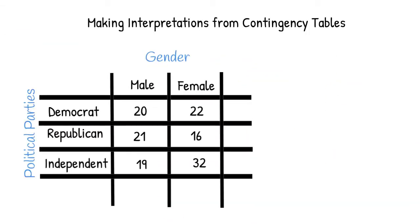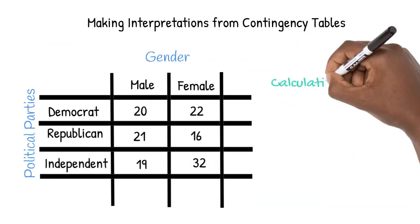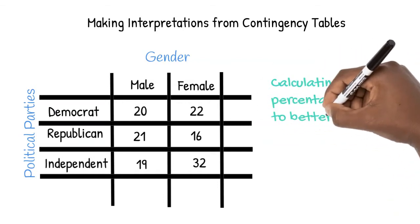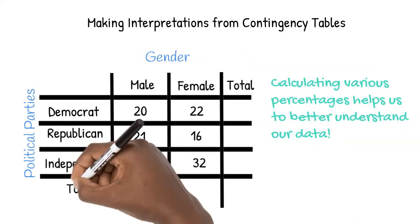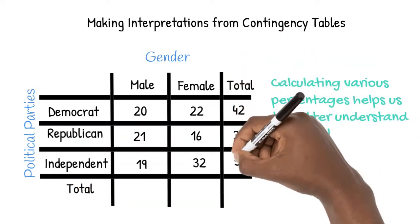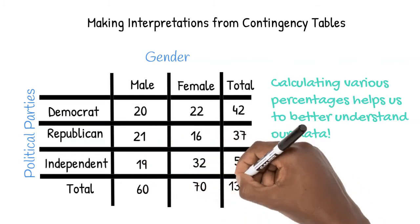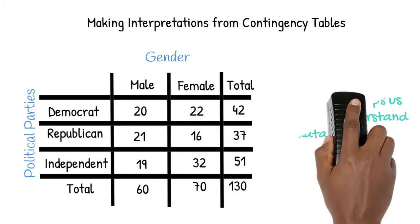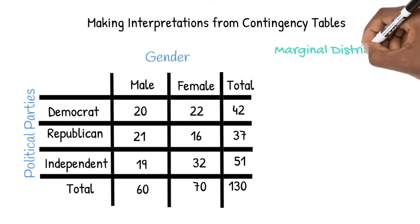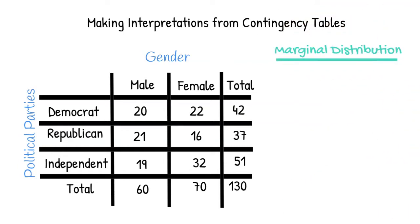Another set of interpretations can be made through calculations. Calculating various percentages helps us to better understand our data. Before we can start calculating percentages, we need the sums for each row and column along with the total number of people surveyed. Let's start by looking at what we can interpret from marginal distribution. Marginal distributions are percentages calculated from the margins, or the total row and column, of our table.